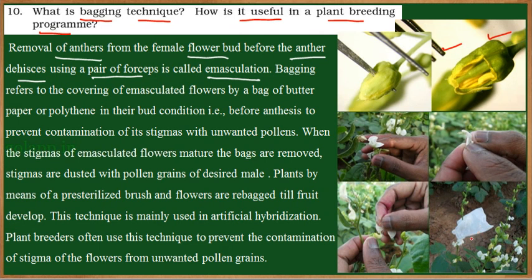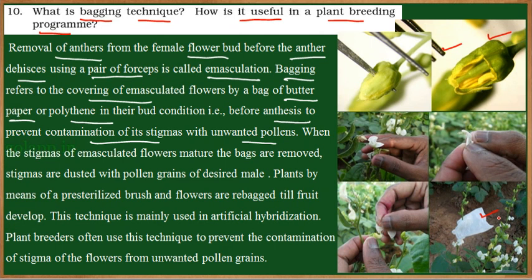Once emasculated, the bud is covered by a butter paper or polythene bag. Bagging refers to this covering of the emasculated flower. It is covered until the flower matures and the stigma completely grows — this is done before anthesis to prevent contamination of the stigma with unwanted pollens. This prevents both self-pollination (since anthers are removed) and cross-pollination from different flowers (since the bud is covered).